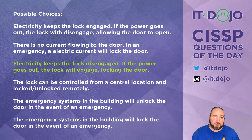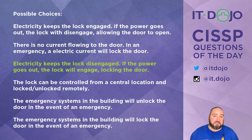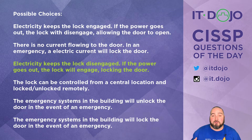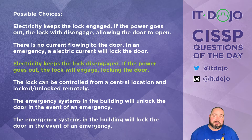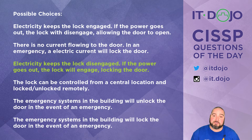If something fails to a safe state, you're failing it to a safe state for people, which typically means it's going to fail to an unlocked state. With electromechanical locks: in a fail-safe lock, electricity keeps the lock locked — when power is removed, the lock fails to an unlocked state. In a fail-secure state, electricity keeps the lock open; when power is removed, the lock goes into a locked state.